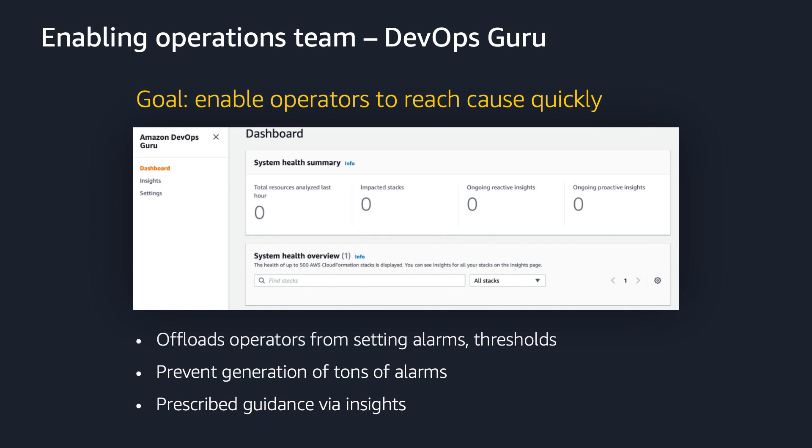When an anomaly is detected, DevOps Guru correlates issues and trails to provide you with a meaningful sequence of events, which is called an insight. Instead of dealing with multiple alarms that don't pinpoint the symptoms and root cause of an issue, a DevOps Guru insight groups together the information you need about the failing resources and provides prescriptive guidance with recommendations to resolve the issue quickly.